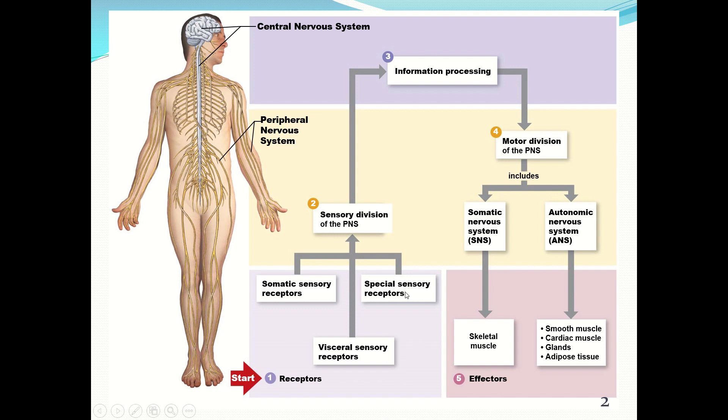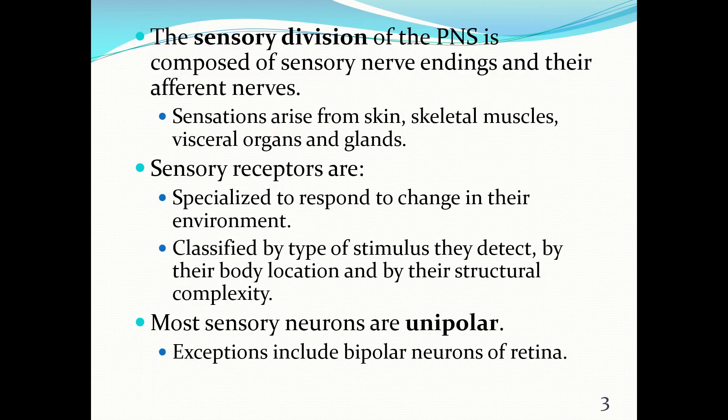Some textbooks include the special sensory receptors with the somatic simply because you are consciously aware of vision, smell, taste, and hearing. The sensory division is composed of sensory nerve endings and their afferent nerves, and since we're talking about nerve endings and nerves, we're in the peripheral nervous system division. Sensations arise from the skin and skeletal muscles — those are your somatic ones — but they can also arise from visceral organs and glands. Sensory receptors are specialized to respond to change in their environment, classified by the type of stimulus they detect, by their body location, and by their structural complexity.